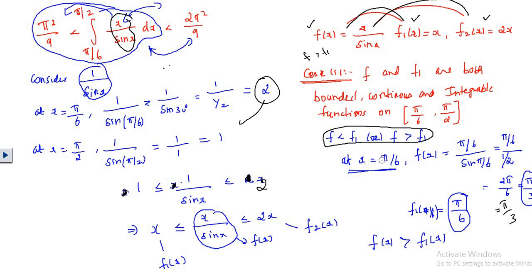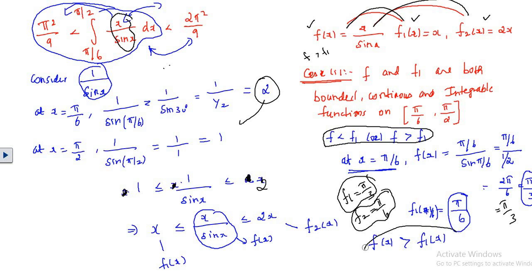At x = π/6: f(π/6) = (π/6)/sin(π/6) = (π/6)/(1/2) = π/3, and f1(π/6) = π/6. So f gives π/3 and f1 gives π/6. Since π/3 > π/6, the value of f is larger than f1. Therefore we obtain that f(x) is strictly greater than f1(x) on the interval.